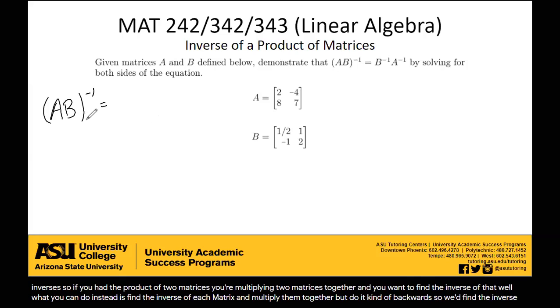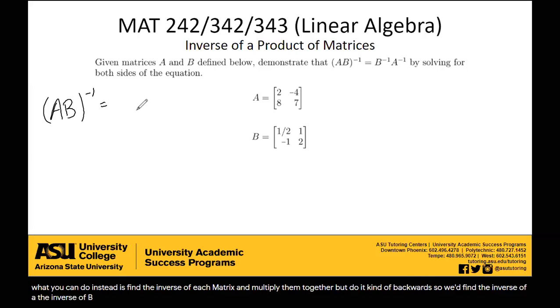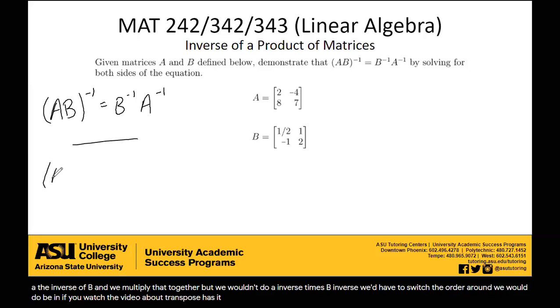So we'd find the inverse of A, the inverse of B, and we'd multiply that together, but we wouldn't do A inverse times B inverse. We'd have to switch the order around. We would do B inverse times A inverse. If you watch the video about transposes, it's very similar to the idea of transposes.